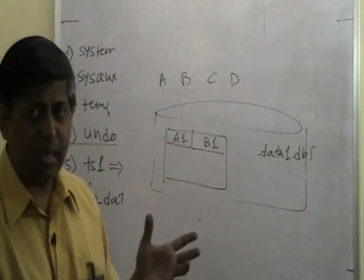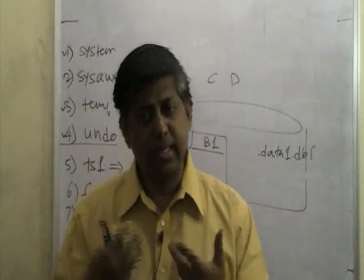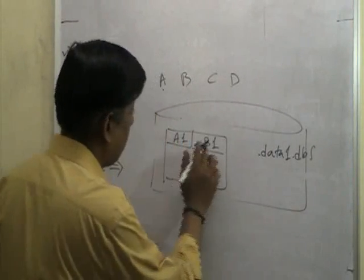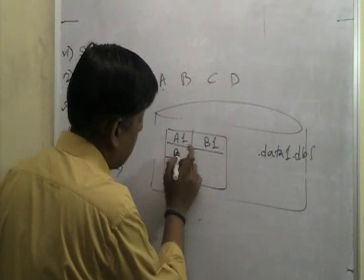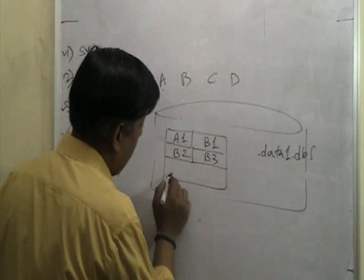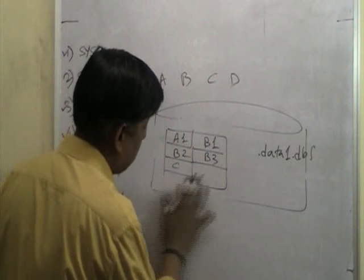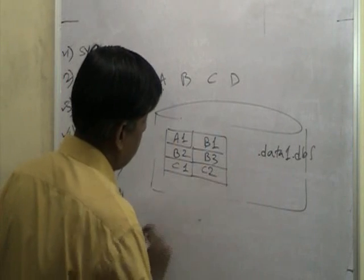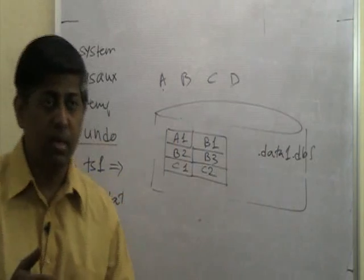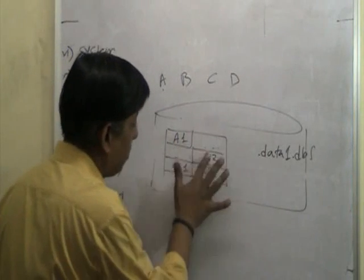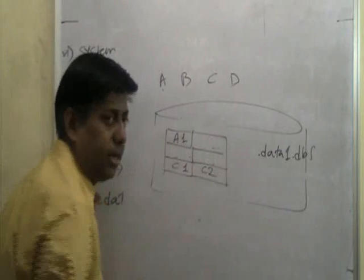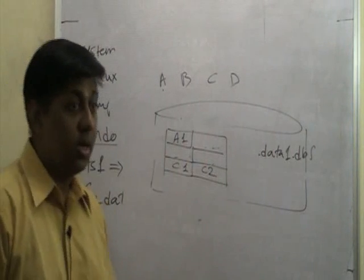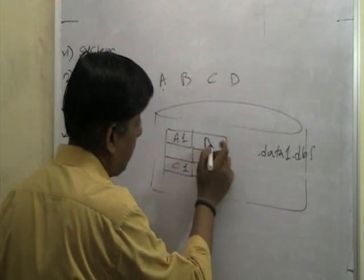If free space is there, even if it is in holes, it can be used. But that is fragmentation. Let's say A1 is here, B1 is here, then B2 is here, then B3 is here, then C1, then C2. Now if you drop table B, three holes are created - B1 gone, B2 gone, B3 gone. That is what fragmentation is.